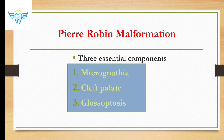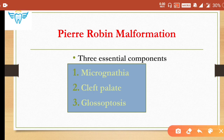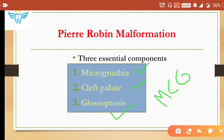Now, Pierre Robin malformation — you must remember the triad, and a helpful mnemonic is MCG: Micrognathia (small jaw), Cleft palate, and Glossoptosis. In Pierre Robin, the patient does not actually have a large tongue, but because of micrognathia, glossoptosis occurs.